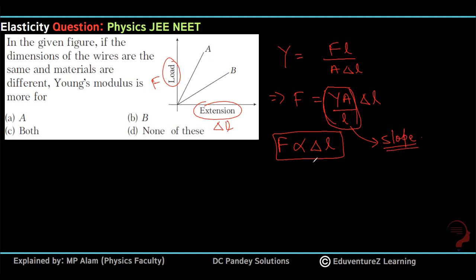If we see a straight line graph here, if load and extension graph is straight line, that means slope is constant. A's slope is constant and B's slope is constant. So if we talk about slope of A...